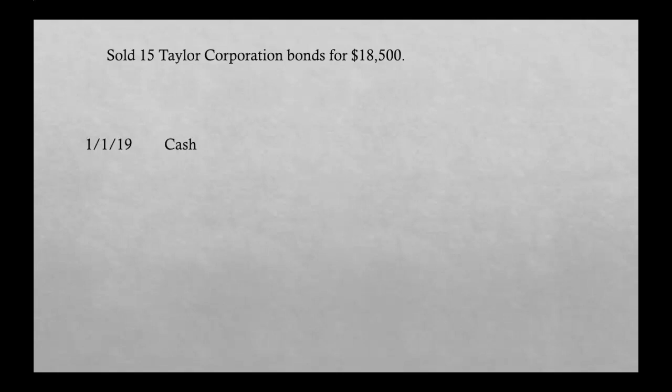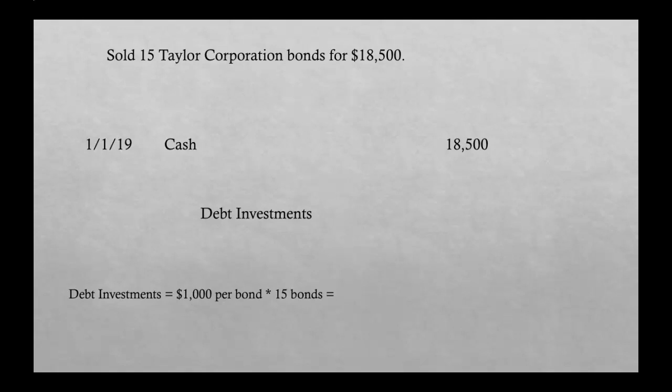Also on January 1st, 2019, we sold 15 bonds for $18,500. We are receiving cash because we're selling our debt investments, so we debit Cash and credit Debt Investments. We're getting $18,500 in cash — the total amount sold for. For Debt Investments, we calculate: we purchased each bond for $1,000 each, and we're selling 15 of them, so 1,000 × 15 = $15,000. That's the amount we credit Debt Investments for.